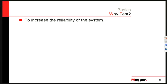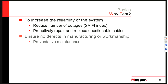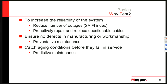Why are we even testing? Ultimately, the goal is to increase the reliability of the system. We're reducing the number of unplanned outages, increasing our safety index, and we're able to proactively repair and replace questionable cables. We can do preventative maintenance, ensure there are no defects in manufacturing or workmanship, prevent faults from occurring in the first place, or predict that a cable is about to fail — trying to catch these aging cases before we suffer an in-service fault.